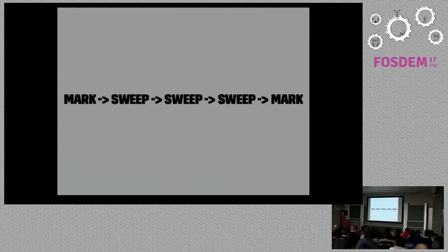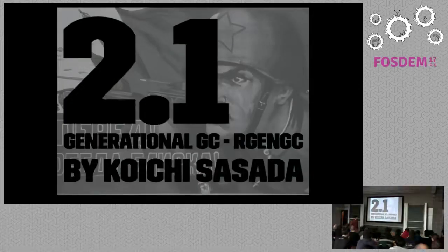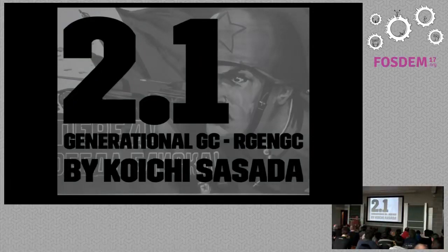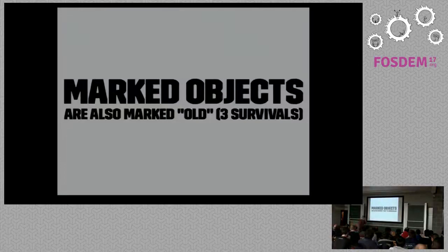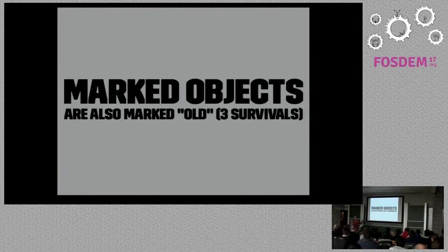In 2.1, we got generational garbage collection — written by Koichi Sasada, a Ruby core team member who works for Cookpad. Certain objects get marked as the old generation and others are new objects. New objects become old when they survive a certain number of garbage collections — currently if you survive three marking phases, you're promoted to an old object. This introduced minor and major GCs.